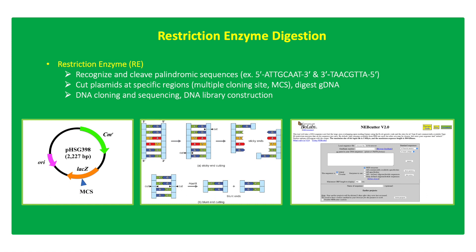Restriction digestion uses restriction endonucleases, or restriction enzymes (RE), which recognize specific DNA sequences or restriction sites about 6 to 8 base pairs. Most REs recognize palindromic DNA sequences, which generate DNA strands having the same sequence when read from 5' to 3' direction.